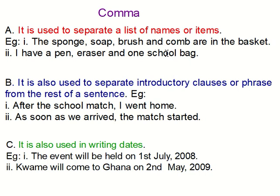I hope it is clear. The comma is also used in writing dates. It's not only used in separating lists of names or items; it's also used in writing dates. For example: 'The event will be held on 1st July, 2008.' After '1st July,' a comma is placed, then 2008 follows. The second example: 'Kwame will come to Ghana on 2nd May, 2009.' A comma is placed after '2nd May,' then 2009 follows.